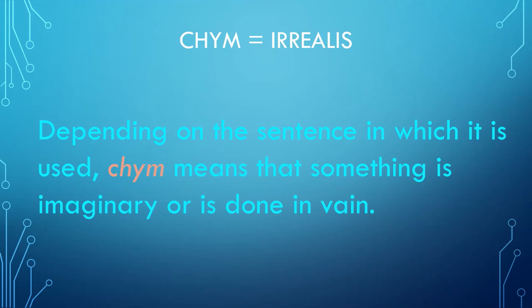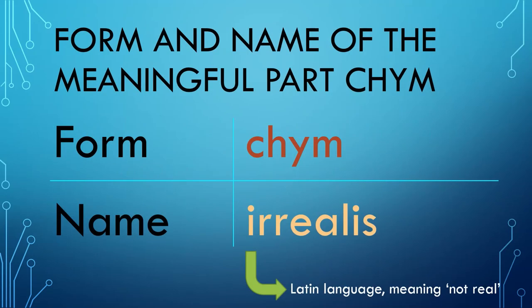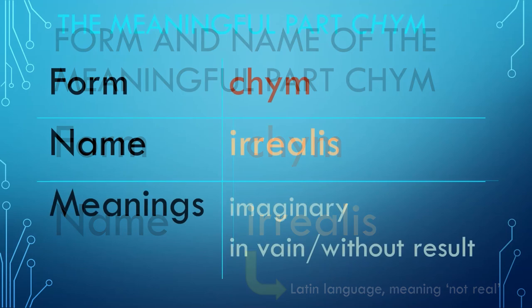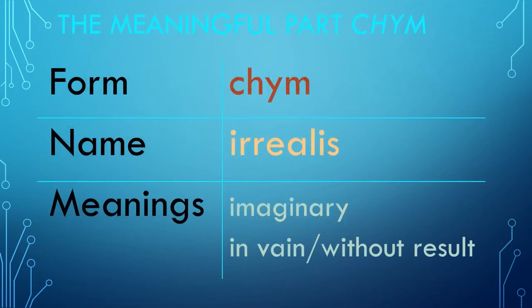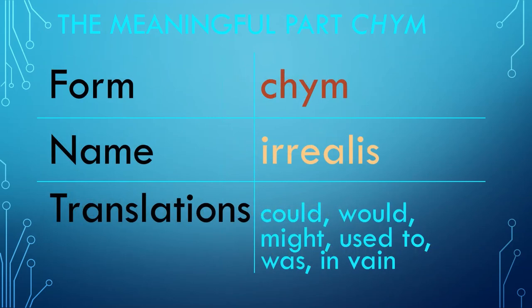So in Atong, there is a meaningful part Chm which, because of all its different meanings and usages, is called the Irealis — a Latin word meaning not real. The meaningful part Chm has two main meanings: to indicate that something is imaginary, and to indicate that something is done in vain or without result. When we translate an Atong sentence with Chm into English, we can use words like could, would, might, used to, was, or in vain.